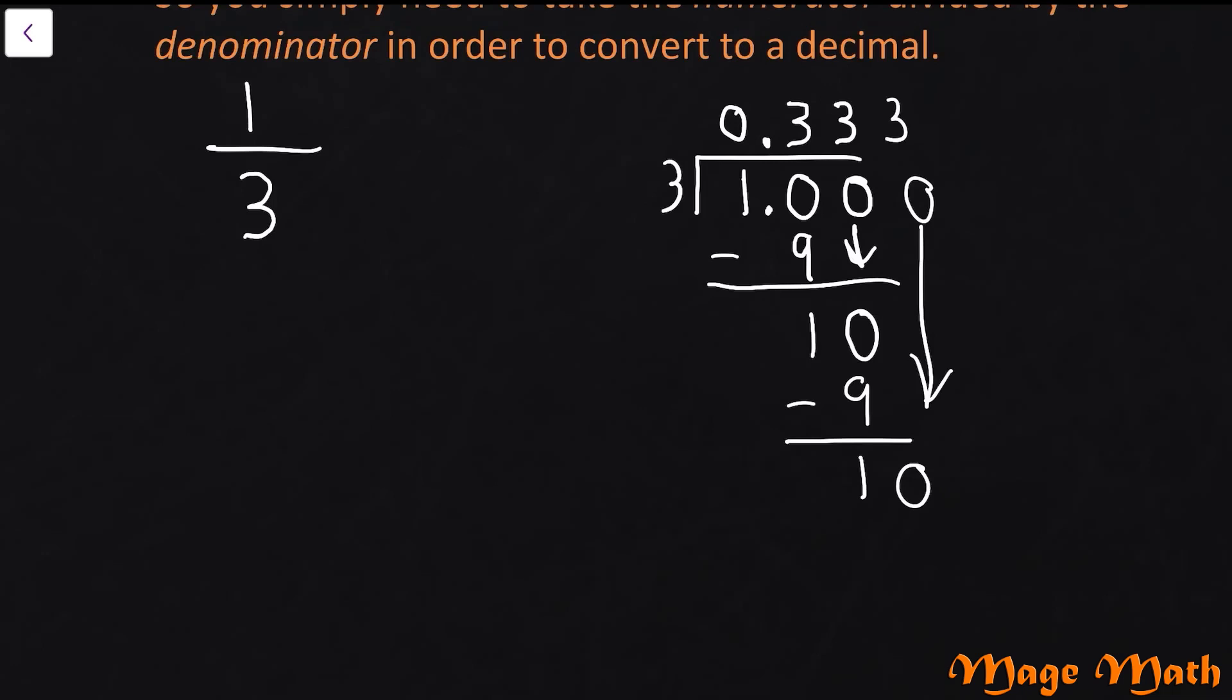So rather than spend the rest of our lives just forever writing 3s, what we can do is we can write this decimal and we simply put a line over the 3. Anytime you see a decimal where there is a line over the number, that means that number is repeating forever. So we don't have to write a bunch of 3s, we can just write a single 3 and put a line over it like this and that tells anyone looking at it that the 3 is going off to infinity.